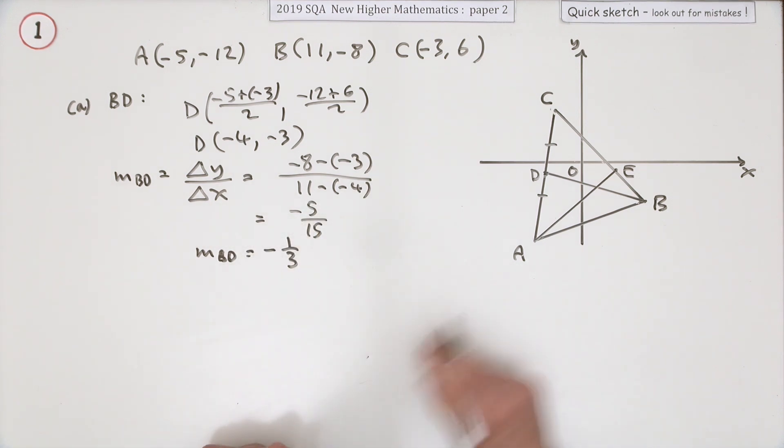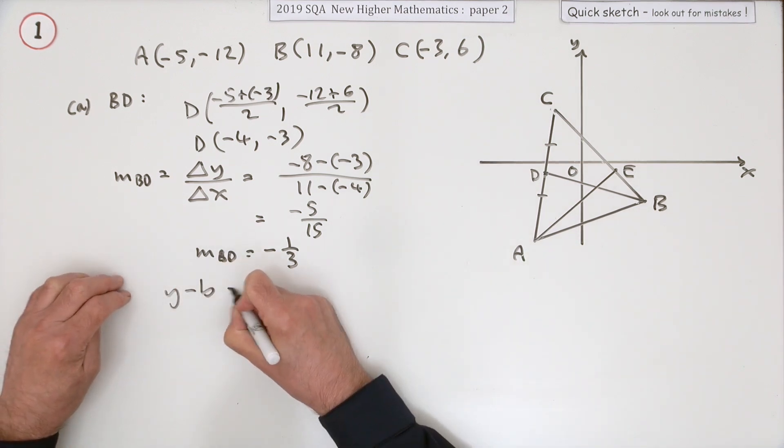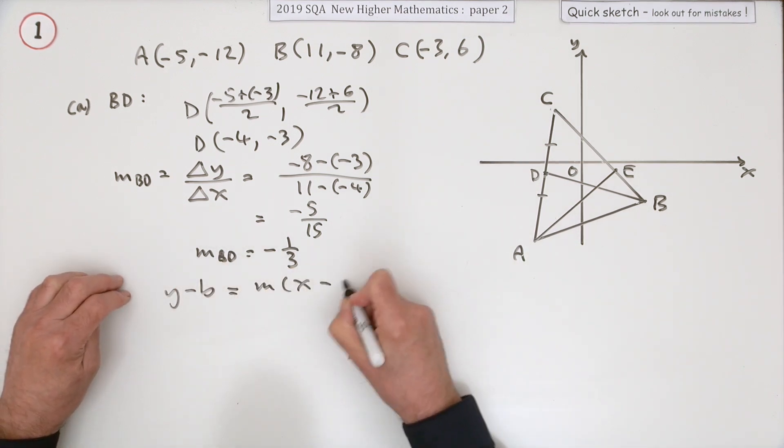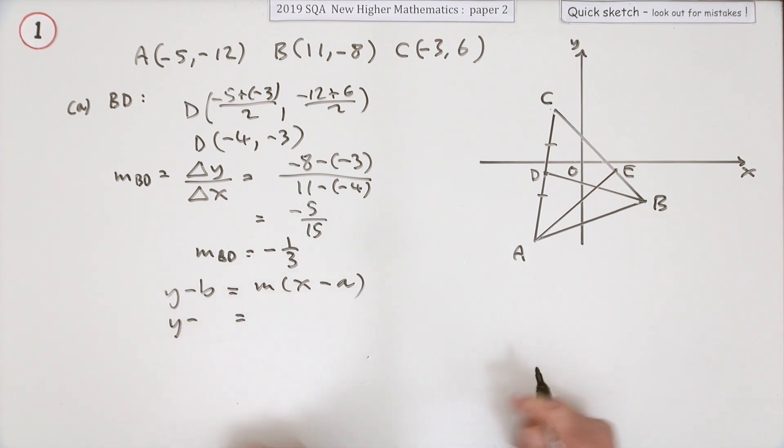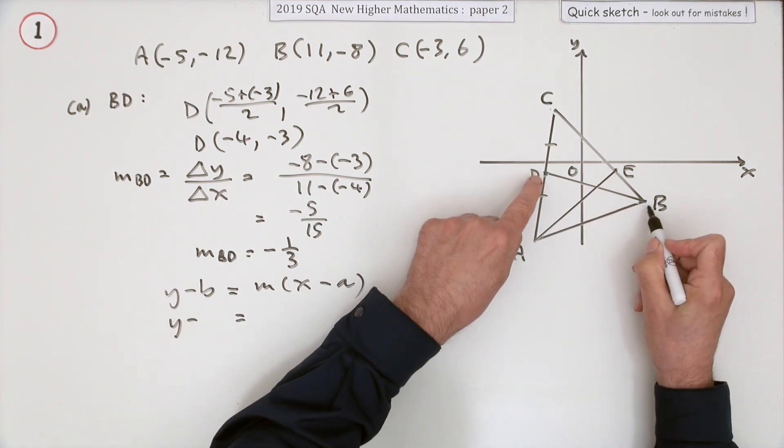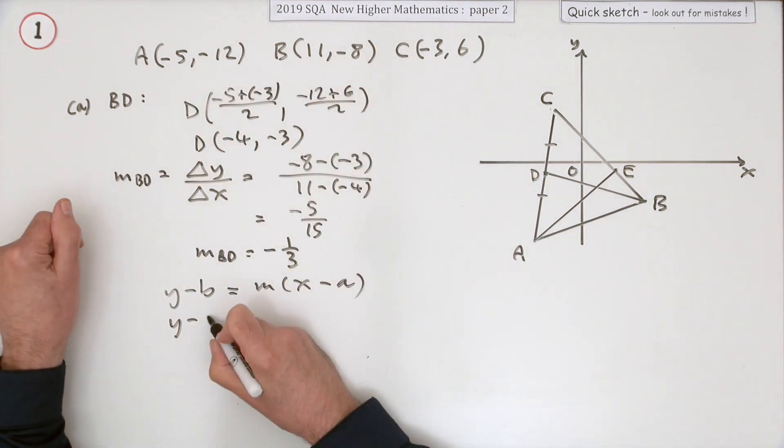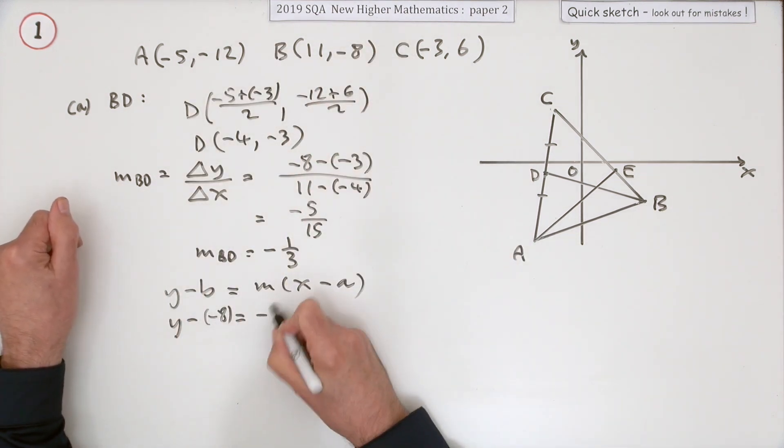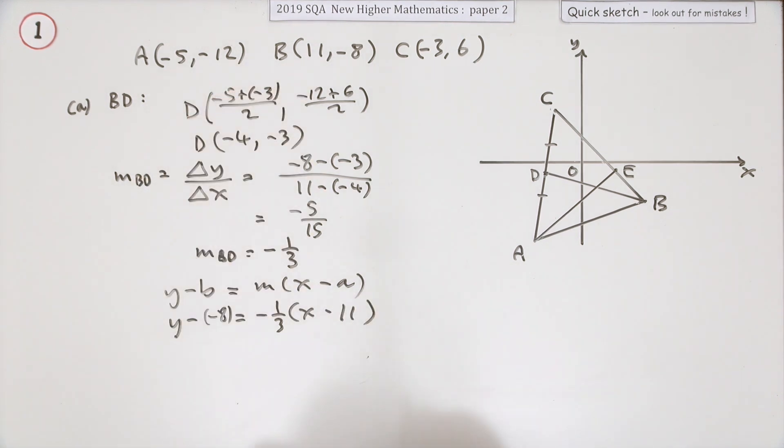There's nothing special about this line, you don't know where it cuts the y-axis, so you just have to go in with y minus b is mx minus a. Y minus the y coordinate of a point, you've got two to choose from but you really just choose the original one. Y minus -8 is -1/3 of x minus the x coordinate which was 11.